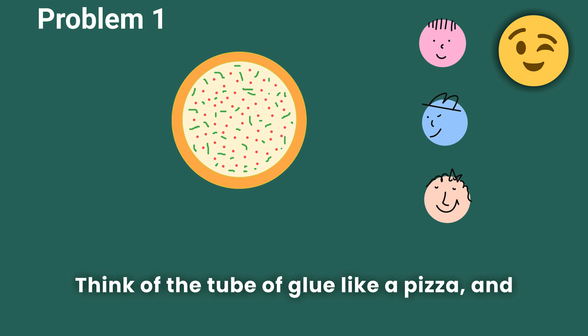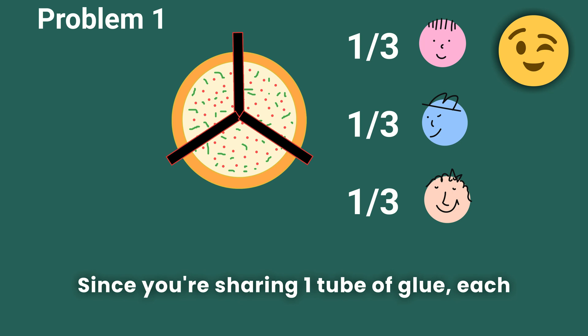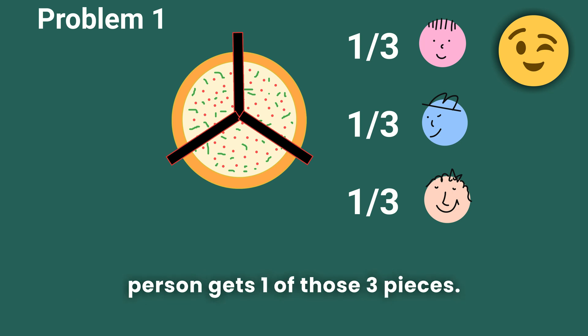Think of the tube of glue like a pizza, and you want to share it equally with your three friends. You would cut the pizza into three equal pieces. Since you're sharing one tube of glue, each person gets one of those three pieces.